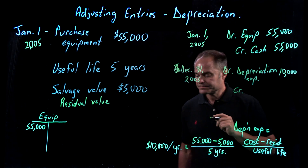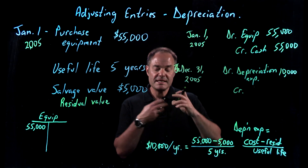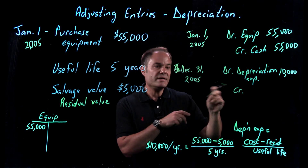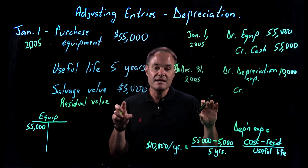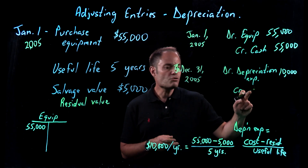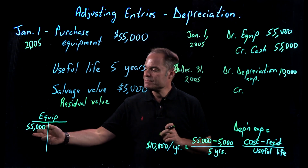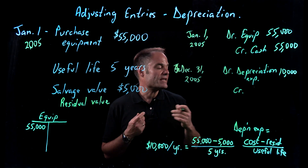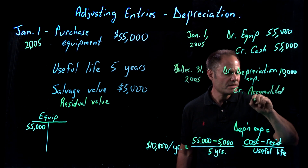Here's where it gets a little interesting. We could credit Equipment, because we're trying to decrease the value of our equipment over time — but we don't. We always want to keep that $55,000 available on our balance sheet so we can always see what we paid for the equipment. So we need to create a new account called Accumulated Depreciation.